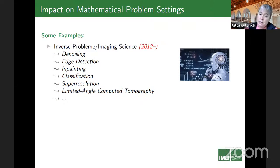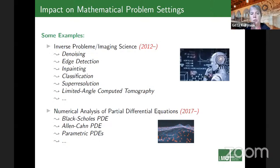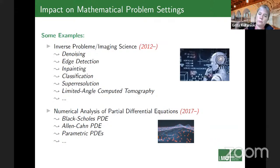Another area in scientific computing is numerical analysis of partial differential equations, which was much slower to embrace methods from artificial intelligence — because a partial differential equation is a physical model itself, so it is not per se clear why we need new methods. But in the high-dimensional regime, these methods are extremely successful and can often circumvent the curse of dimensionality, so from 2017 on, research there just took off.